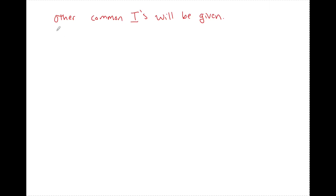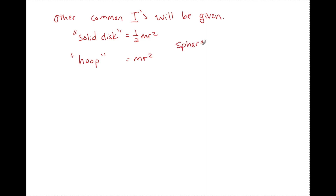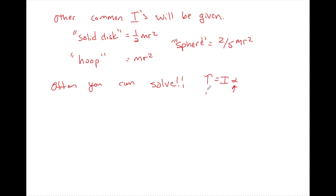With the exception of M R squared, other common moments of inertia will be given. For a solid disk, I equals one half M R squared. For a single particle or a hoop — where all the mass is on the outer surface — I equals M R squared. For a solid sphere, I equals two fifths M R squared. If you cannot be given I, you can often solve for it using torque equals I alpha. But I highly recommend memorizing I equals M R squared for a single particle, some distance R from the center of mass.